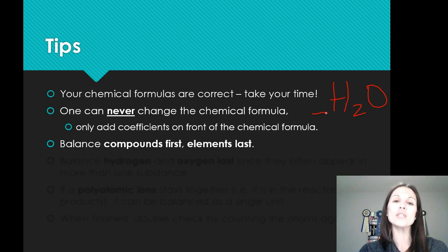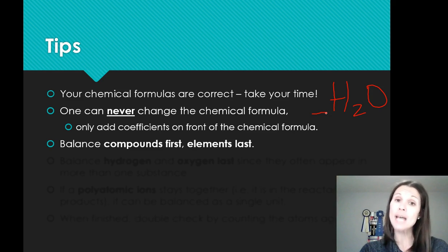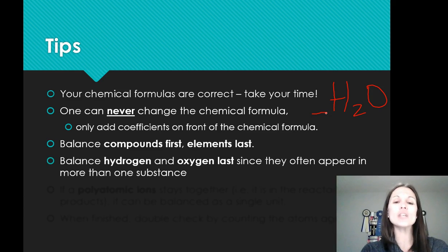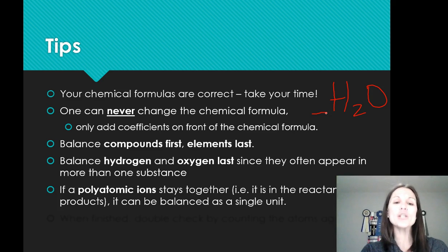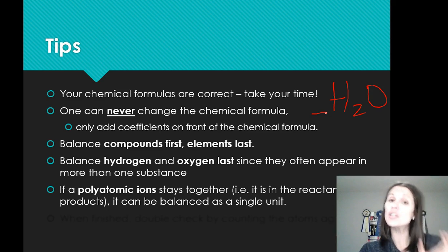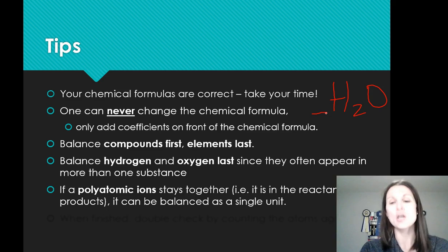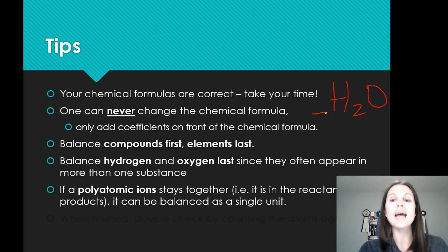Balance all the compounds first and leave plain elements last — we saw that with calcium in the last example. Leave lone elements alone if you can, because oftentimes they'll balance themselves out and it's easy to put a coefficient in front of them at the end. Balance hydrogen and oxygen last if you have complex molecules, because they're often in multiple compounds and if you balance the other things first they often work out themselves. If there are polyatomic ions, those ions stay together — we saw that with hydroxide in the last example. The OH stays as an OH, so some people balance polyatomic ions as individual units.